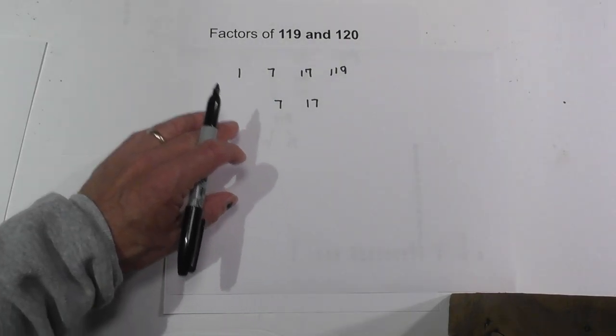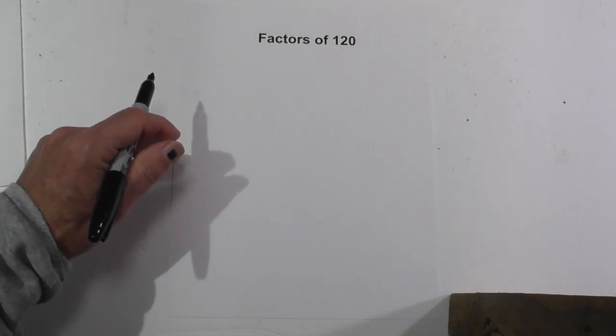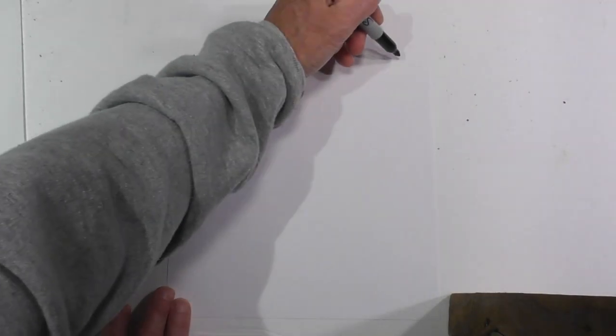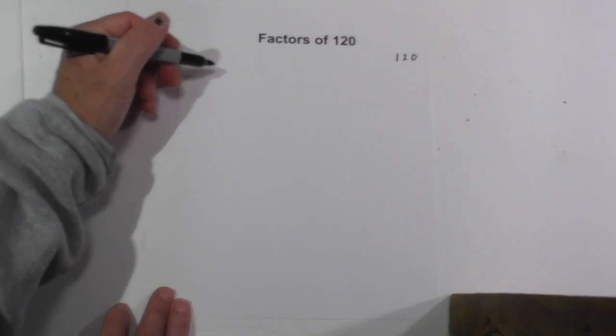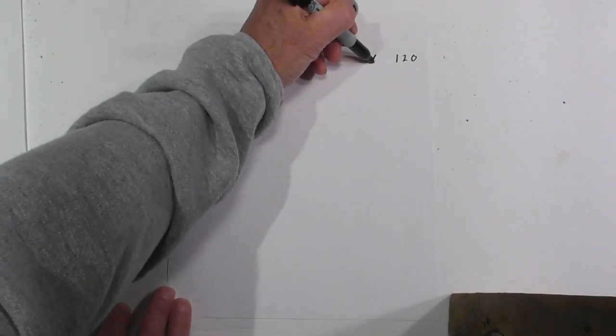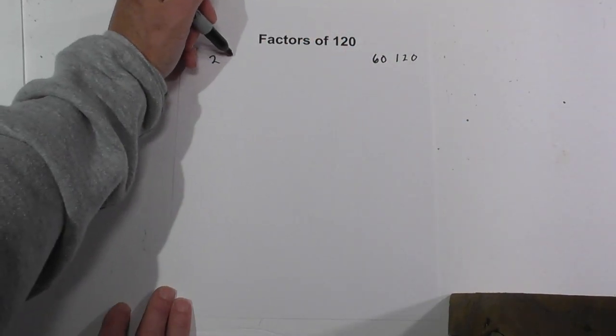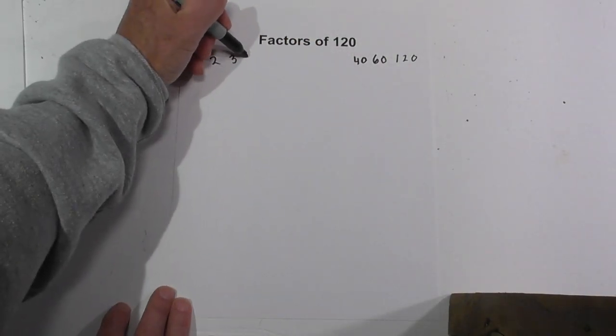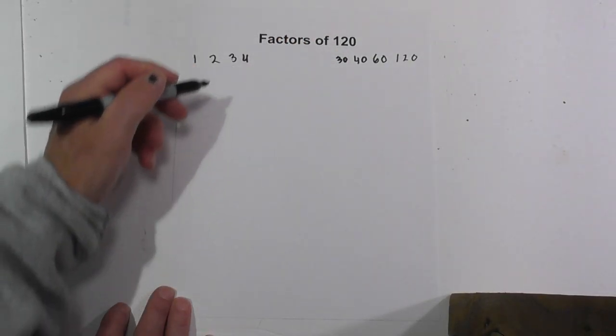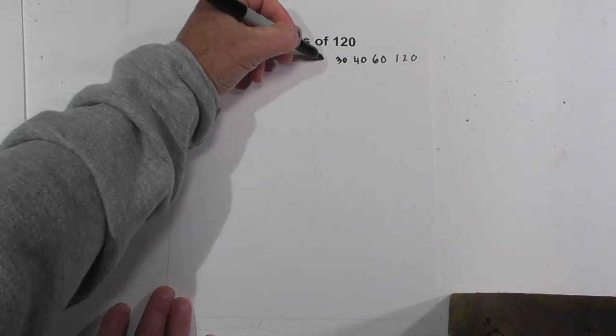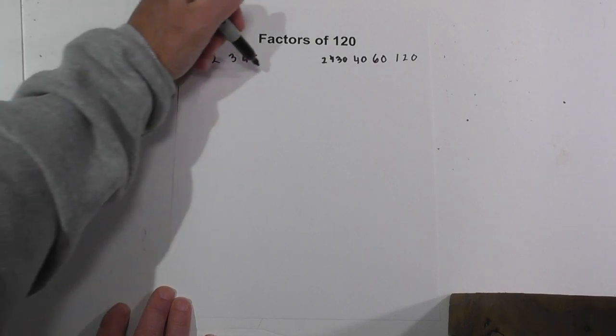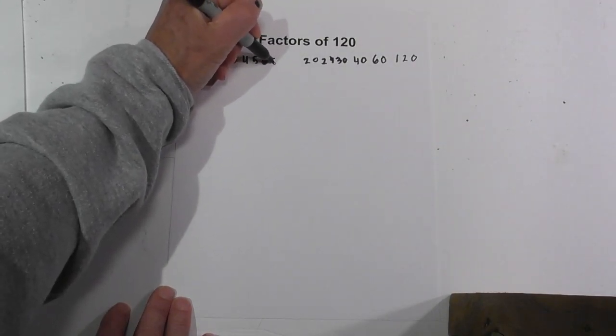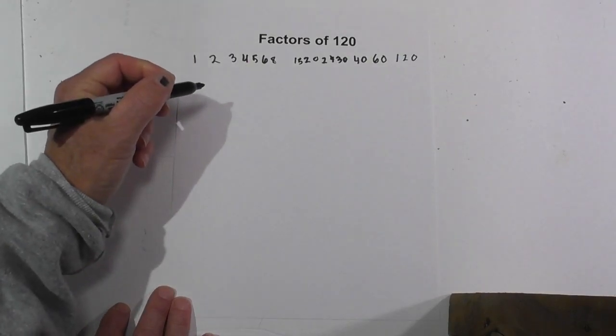Now let's look at 120. 120 has quite a few factors, so let's get started. We'll start with 1 times 120. Now we have 2 times 60, 3 times 40, 4 times 30, 5 times 24, 6 times 20, 8 times 15, and then 10 times 12.